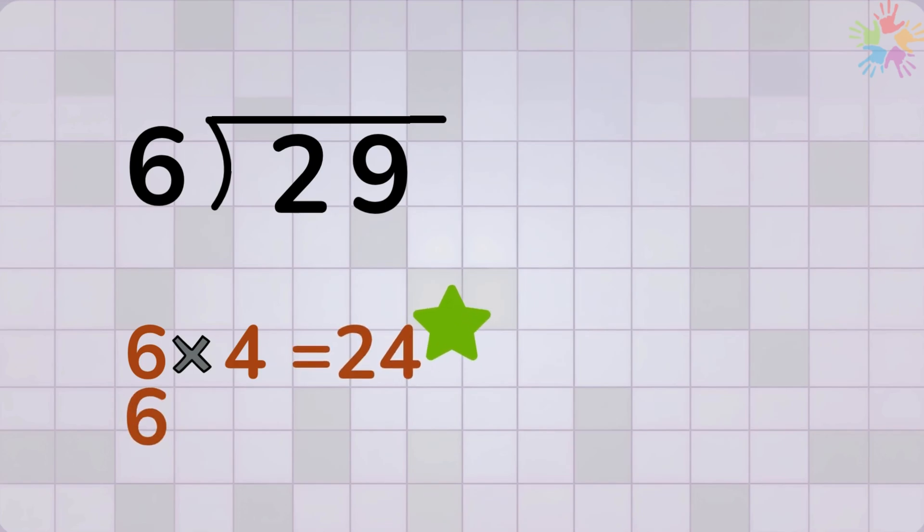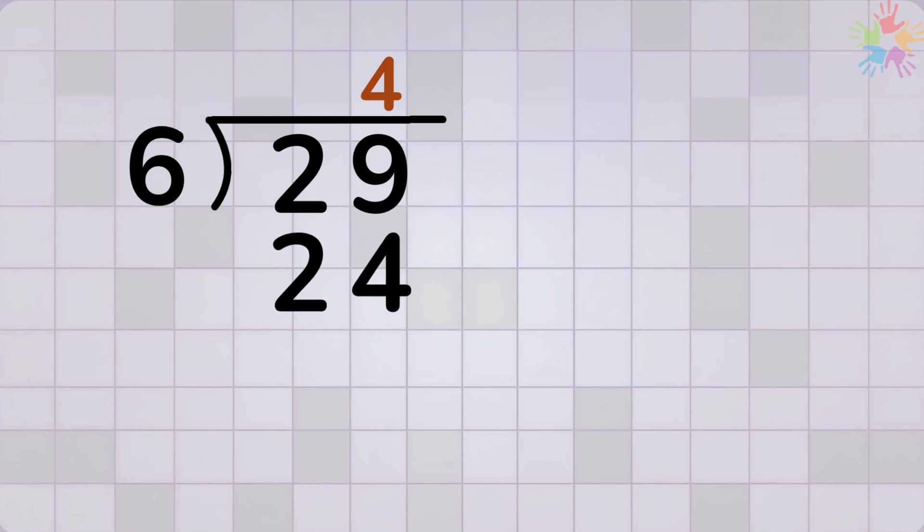6 times 5 equals 30. That's too much. So we go with 4. We write the number 4 at the top. Because 4 times 6 is 24. Now subtract. 29 minus 24 equals 5. That 5 is our remainder.